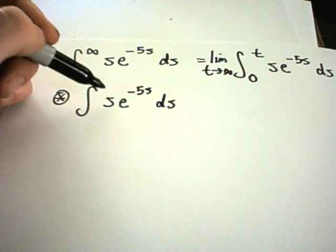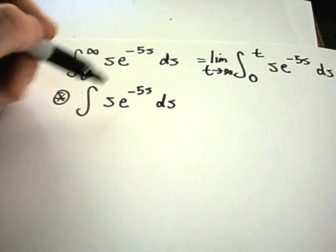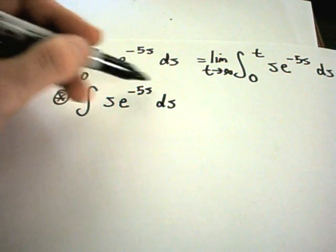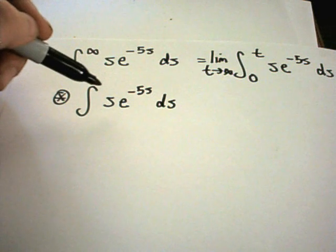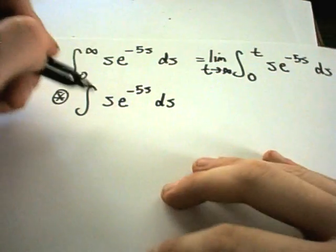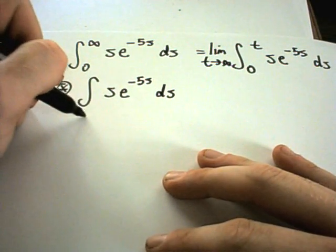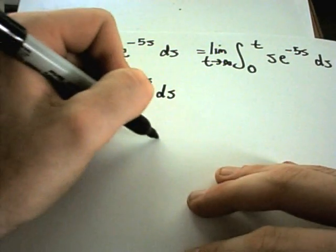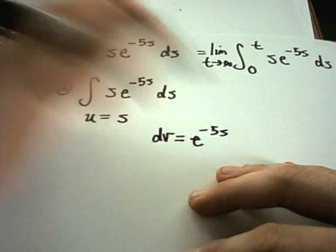I have to remember how to integrate s·e^(−5s). A u-substitution won't really work here — there's not a lot of algebra you can do. This is one of those integration by parts problems. So we'll let u = s and dv = e^(−5s) ds.